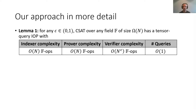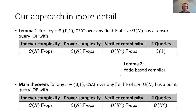In more detail, we start by showing that there's a tensor query IOP which has a linear prover time, linear indexer time, sublinear verification time, and a constant number of queries. Then, using the code-based compiler, we convert this into the IOP for our main theorem.